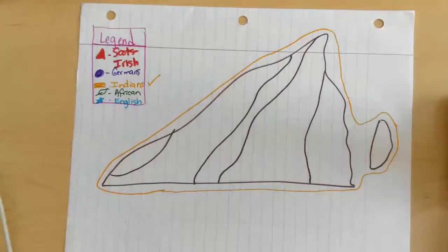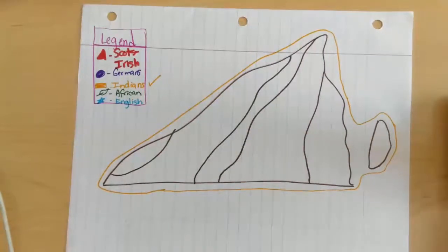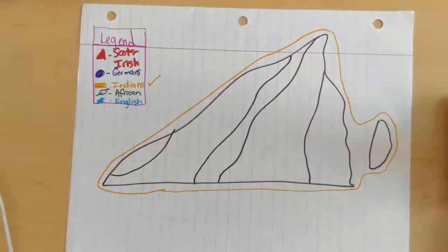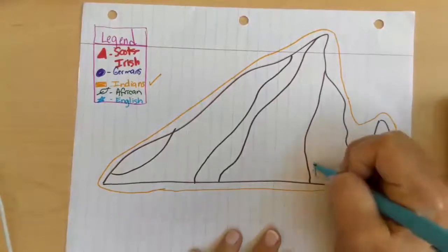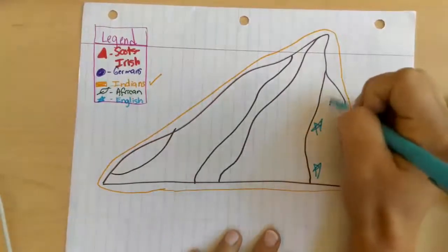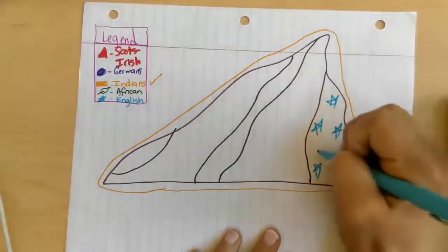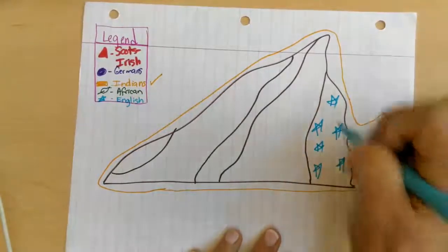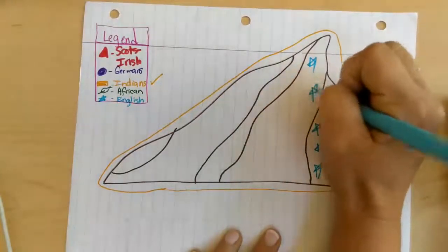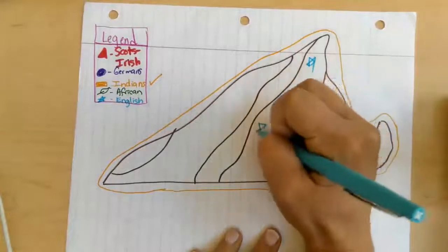The next group that came to Virginia, does anybody remember what group came next? It was the English, you're exactly right. All right, so you have the English that came and we're going to represent the English in the coastal plain and tidewater region with blue stars. So if you just take your blue and create stars all throughout the coastal plain and Piedmont regions.